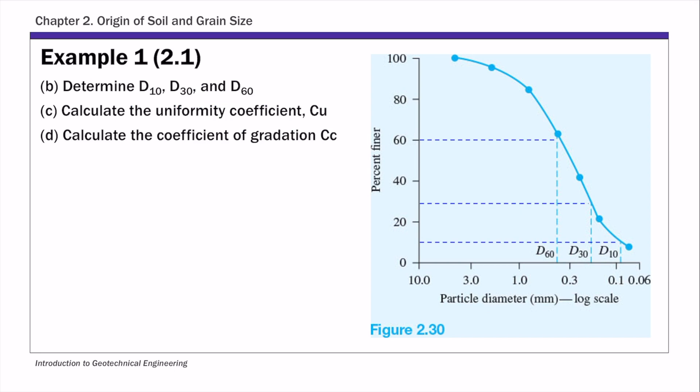So d10, by definition, is the particle diameter that corresponds to 10 percent finer or 10 percent passing. From this PSD curve, first find the 10 percent finer on the y-axis. Then find the corresponding particle diameter. Basically, you draw a horizontal line, it's going to intersect your PSD curve, and the corresponding x-axis is your d10.